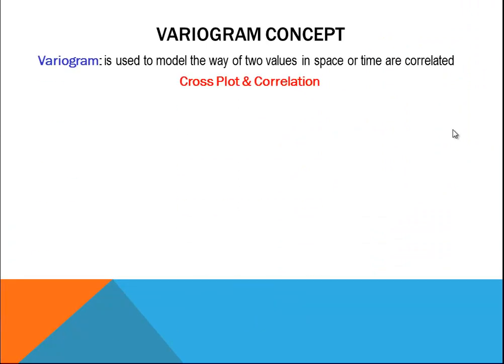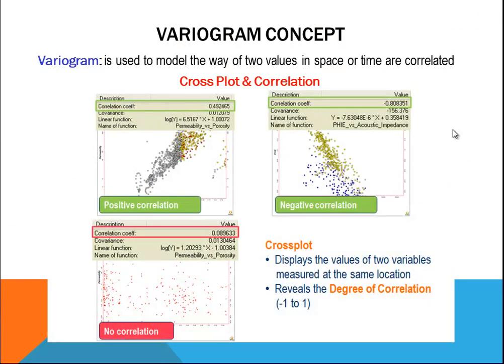As displayed on that cross plot, we can easily get positive correlation, negative correlation, and no correlations. That's a very comprehensive illustration for the variogram concept.